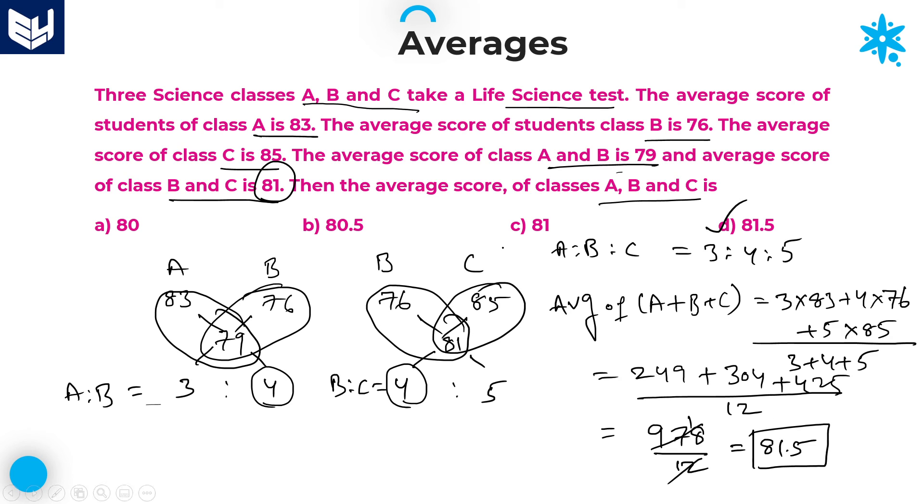Option D is the right answer for this question. In this way, you have to solve this kind of problems. First you need to calculate A is to B, after that B is to C. Once you are getting A is to B and B is to C, it is very easy to calculate ABC ratio. Once you are getting ABC strength ratio, it is very easy to calculate average of ABC. Why? Because average is nothing but sum divided by number of persons. So average is equal to strength in A, 3, and the average is 83, you will get sum of A. After that sum of B is 4 into 76, sum of C is 5 into 85. That will give sum of all A, B and C, and divided by total strength in all 3 sections, 3 plus 4 plus 5, that is 12. After calculation, you will get the average is 81.5. Option D is the right answer for this question.